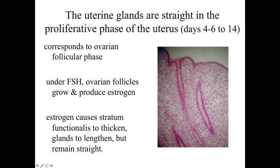During the proliferative phase of the uterus, corresponding to the ovarian follicular phase, the ovarian follicles are secreting estrogen. Estrogen stimulates the cells within the endometrium to grow and reestablish the stratum functionalis, and we see the establishment of relatively straight uterine glands being present during this phase.